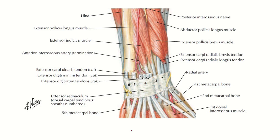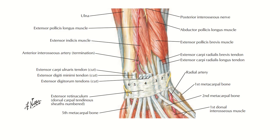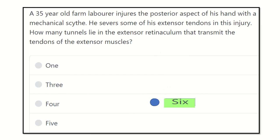Using these tricks, we can easily remember the compartments of the extensor retinaculum and the muscles that lie in each compartment. Finally, our answer is clear: there are a total of six tunnels present in the extensor retinaculum. Thank you.